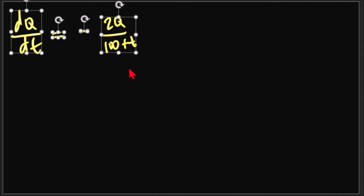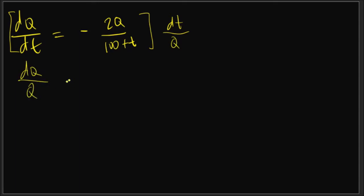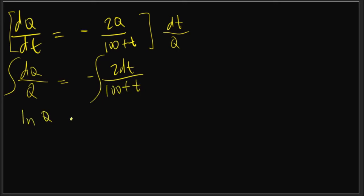This is a variable separable equation. Dividing both sides, we get dq/q = −2 dt / (100 + t). Integrating both sides gives: ln Q = −2 ln(100 + t) + C.